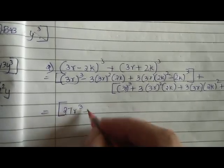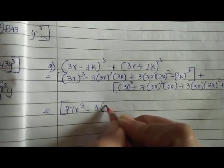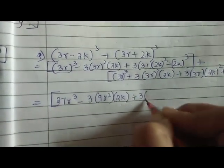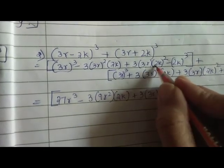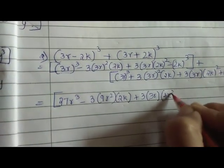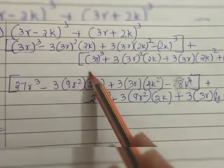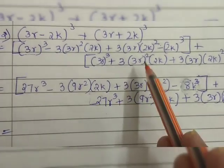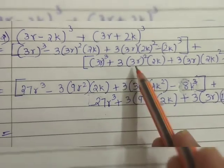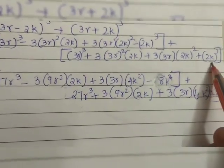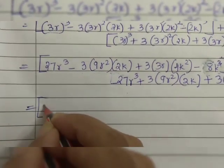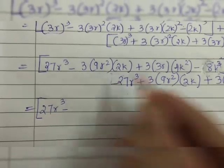The cube of 3r is 27r³. The square of 3r is 9r². We write down the term as it is, then the square of the next term gives 4k², and similarly the cube of 3r gives 27r³. We then find the square and cube of each term. After writing these out, we find the product of the three terms.